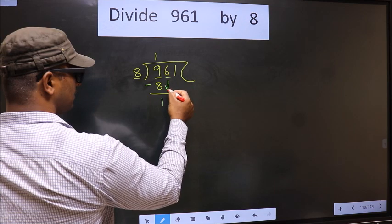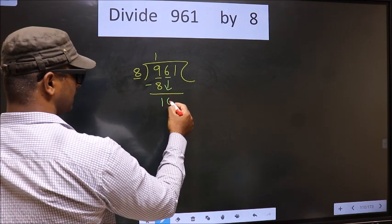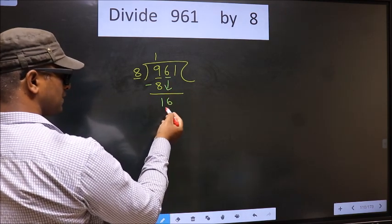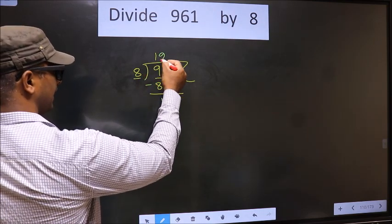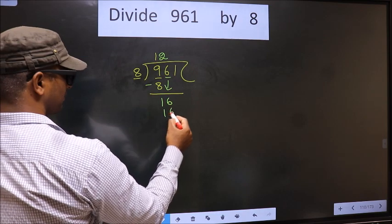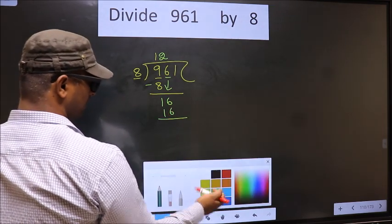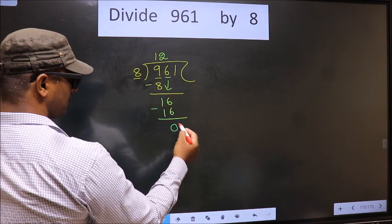Now you bring down the beside number. That is 6 down. So 16, here 8. When do we get 16 in 8 table? 8 times 2 is 16. Now you subtract. 16 minus 16, 0.